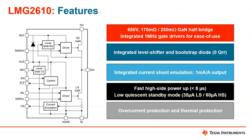Looking at key features within the LMG2610, there are two 650 volt dies. The high side is a 170 milliohm GAN die, and the low side is a 250 milliohm GAN die, with the switch node exposed at the middle of the device. With each of these GAN dies, we have a built-in gate driver within the package capable of switching each GAN die up to one megahertz. This means any power loop challenges or tuning you would have to do between your gate driver and your GAN is eliminated, making it easier to design with in these high-frequency designs.